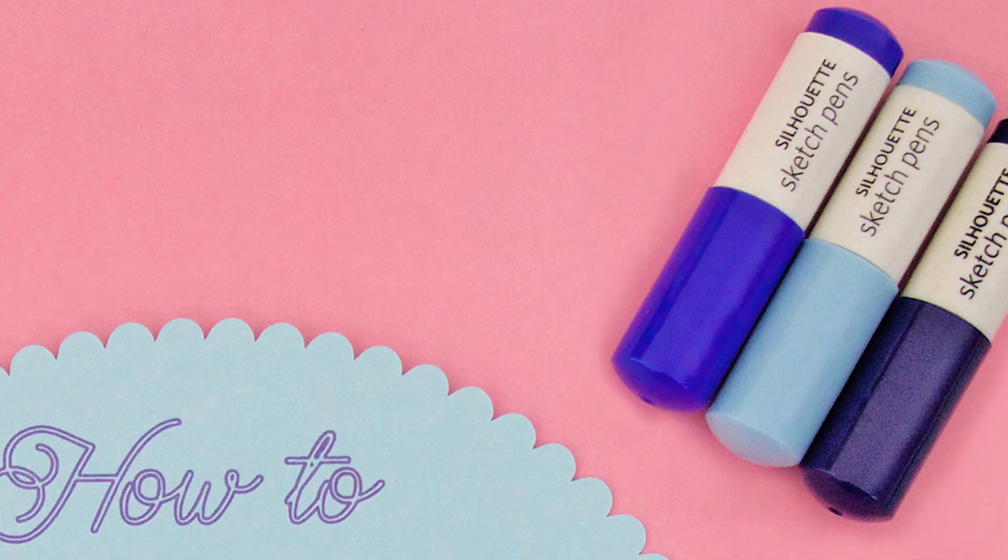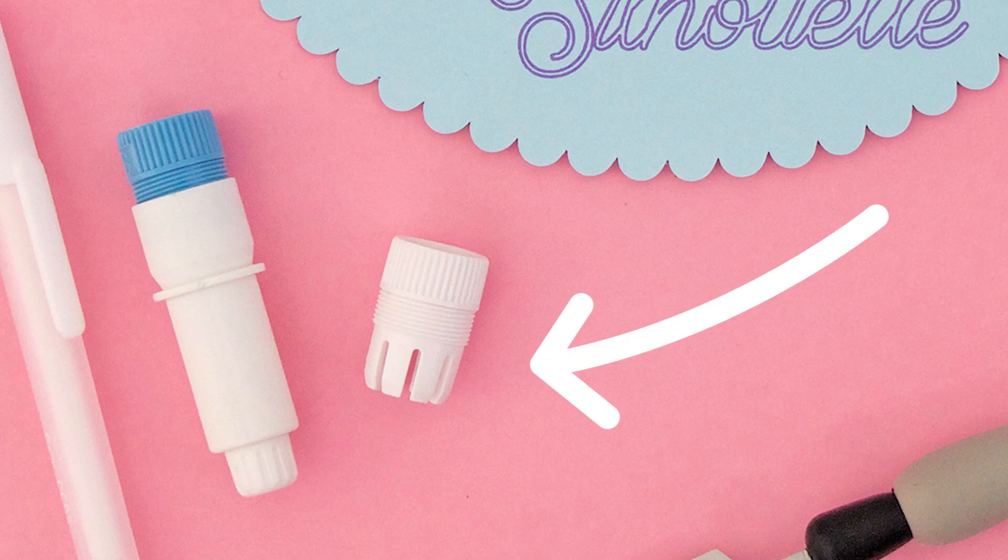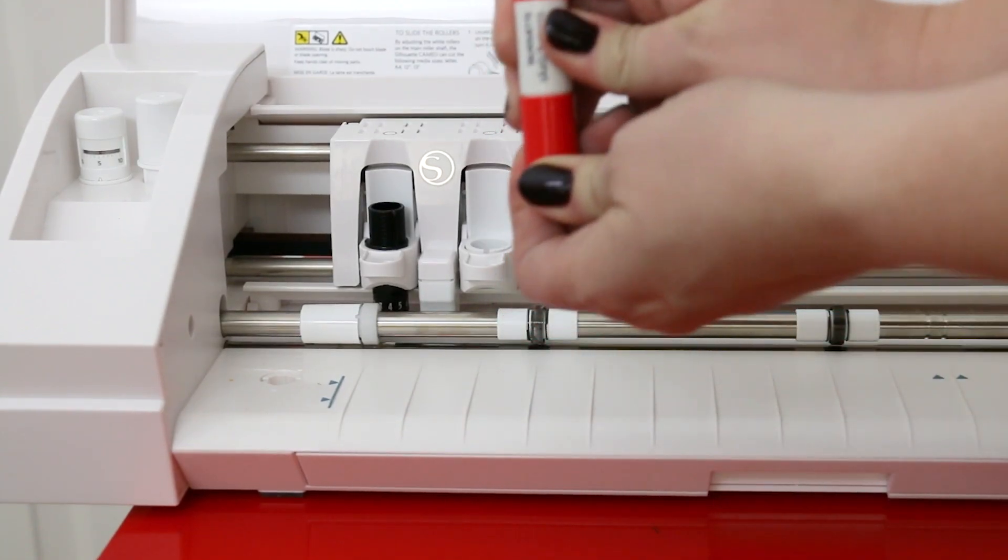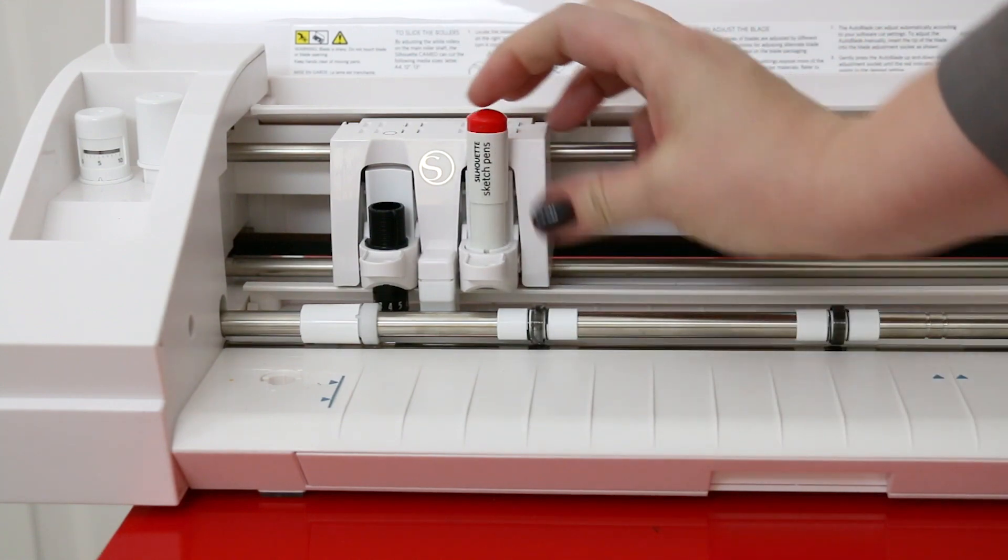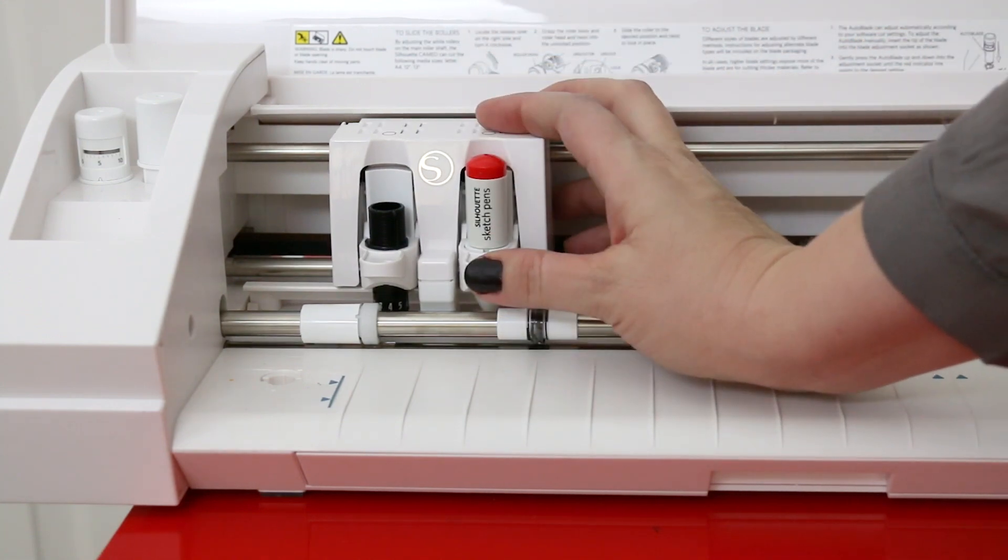You'll also need a Silhouette sketch pen or your favorite pen and a pen holder. If you're using a Silhouette sketch pen, just pull off the lid, place it in the tool holder and lock it in place.